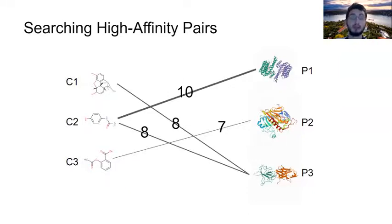For instance, luckily, we have some information in the literature in the form of compound pair and affinity score triplets. For instance, we know that compound 1 binds with protein 3 with the affinity score of 8, and compound 3 binds with protein 2 with the affinity score of 7. And we would like to ask the question, what would be the affinity between compound 3 and protein 3?